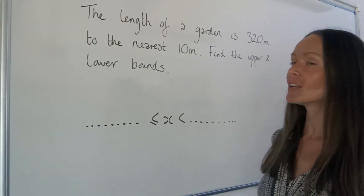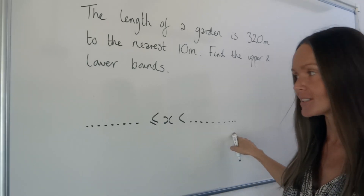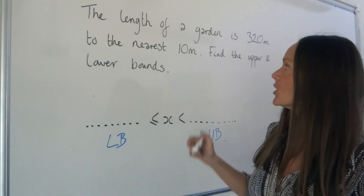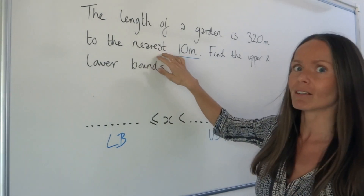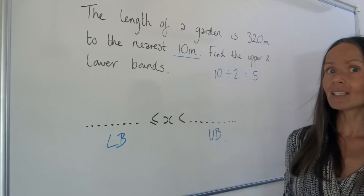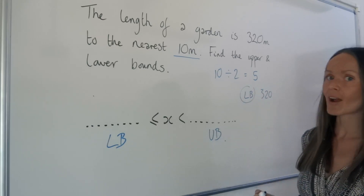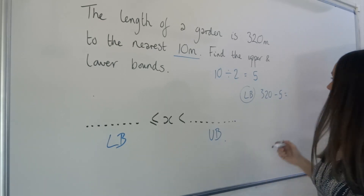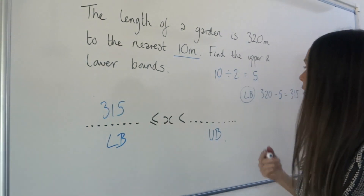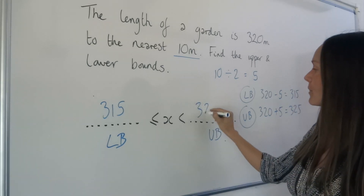In this example, the length of a garden is 320 metres to the nearest 10 metres — find the upper and lower bounds. The lower bound goes on the left of the inequality and the upper bound on the right. Take the number you're rounding to — in this case 10 — and divide it by 2: 10 divided by 2 is 5. To find the lower bound, take the length 320 and subtract 5: 320 minus 5 gives 315, which is the lower bound. To find the upper bound, add 5 to 320: that gives 325, which is the upper bound.